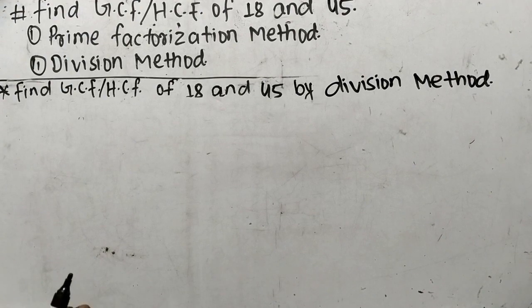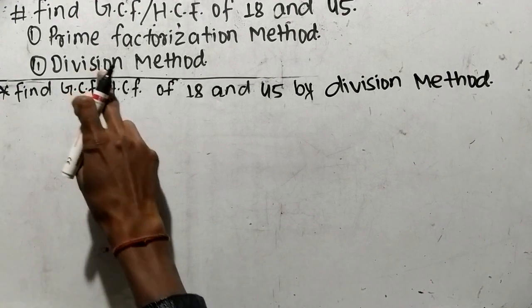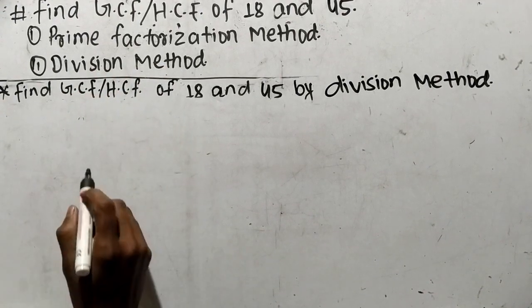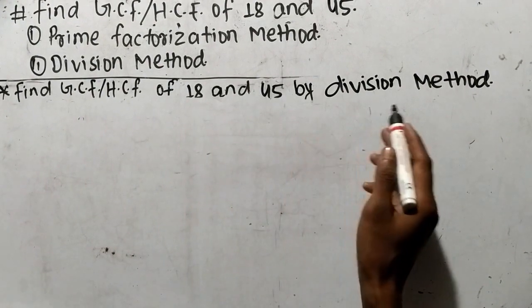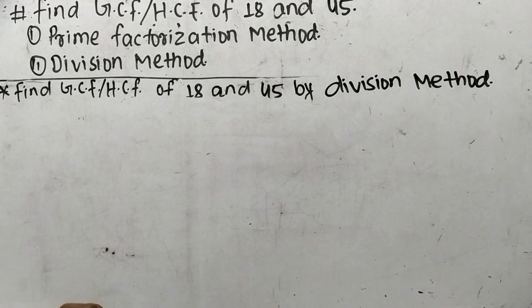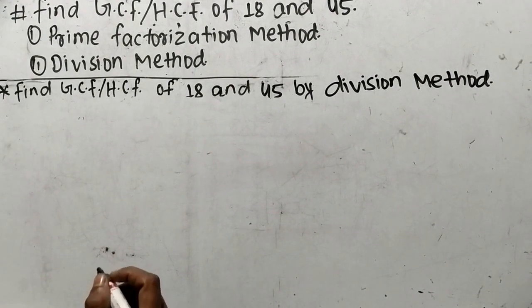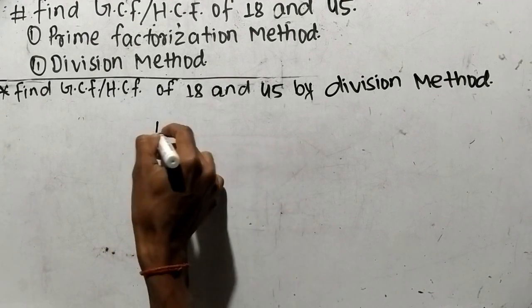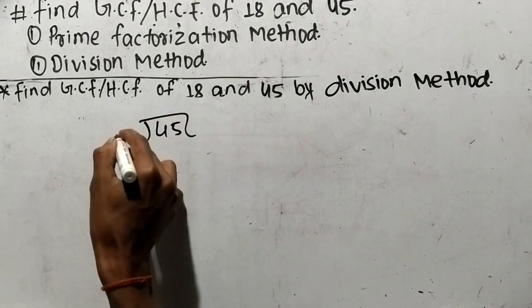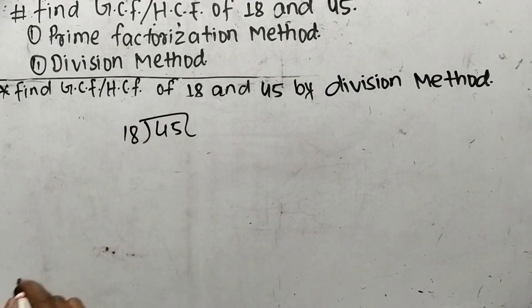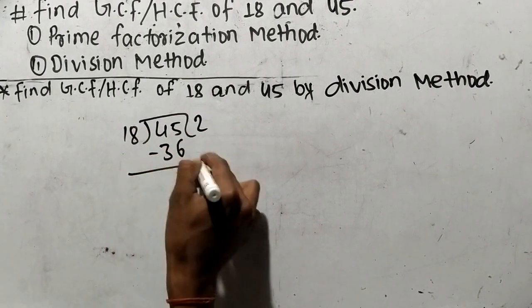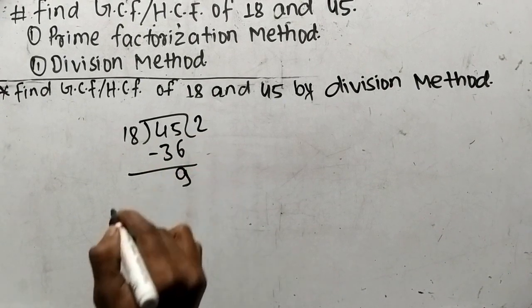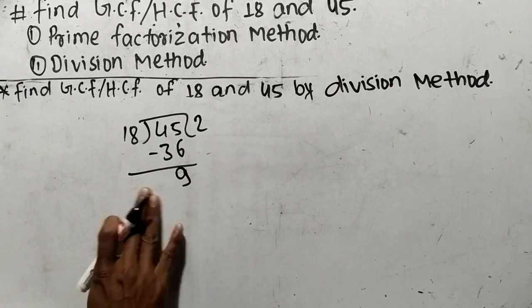Now our second method is by division method. So let's find out GCF or HCF of 18 and 45 by division method. While finding out GCF or HCF by division method, first we have to divide the greater number, which is 45, by the lesser number, which is 18. 18 times 2 is 36, and 45 minus 36 gives us 9 as the remainder.